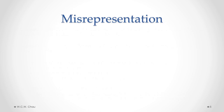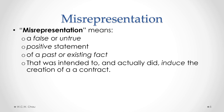Quite often, there are many things said in the negotiations between parties that lead up to a contract, and sometimes something is said that turns out to be untrue. And one of the parties — the other party — relies on that untrue statement in deciding to enter into the contract. This describes a contractual defect called misrepresentation. The definition of misrepresentation is broken up into four parts: a false or untrue positive statement of a past or existing fact that was intended to, and actually did, induce the creation of a contract.